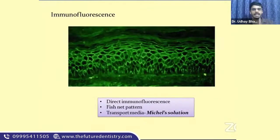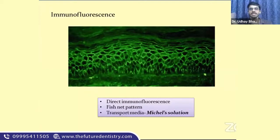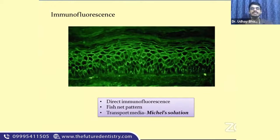The main diagnostic tool for pemphigus is immunofluorescence, most commonly direct immunofluorescence. Direct immunofluorescence is used to determine the presence of autoantibodies in the tissue specimen of the patient. Indirect immunofluorescence is used to determine the presence of antibodies in the serum or blood of the patient. Remember: direct is related to the tissue specimen; it directly focuses on the tissue in hand.